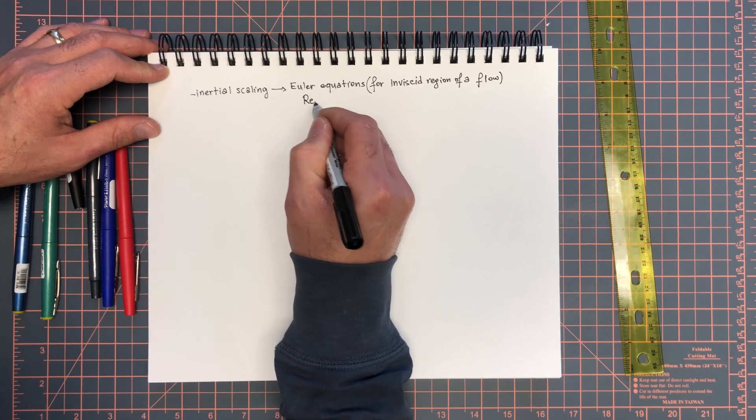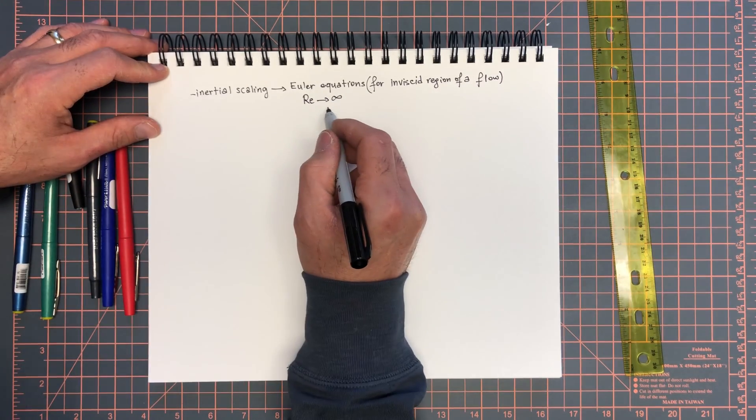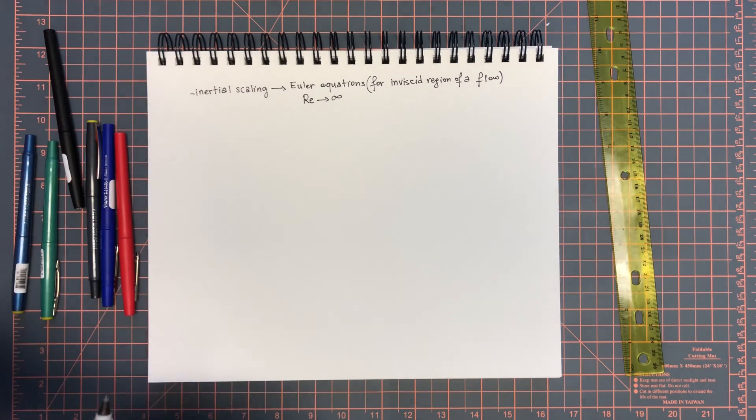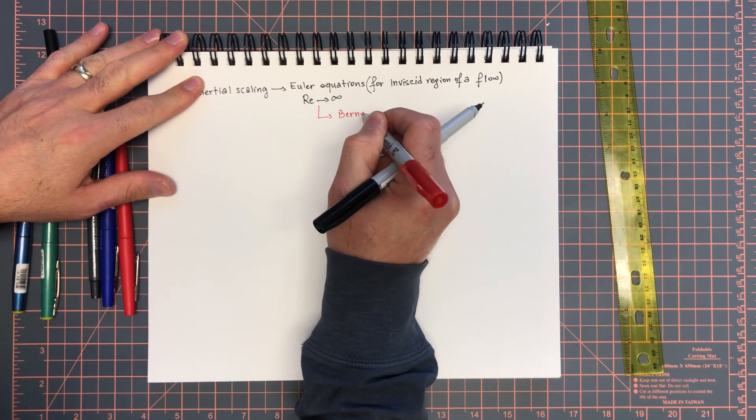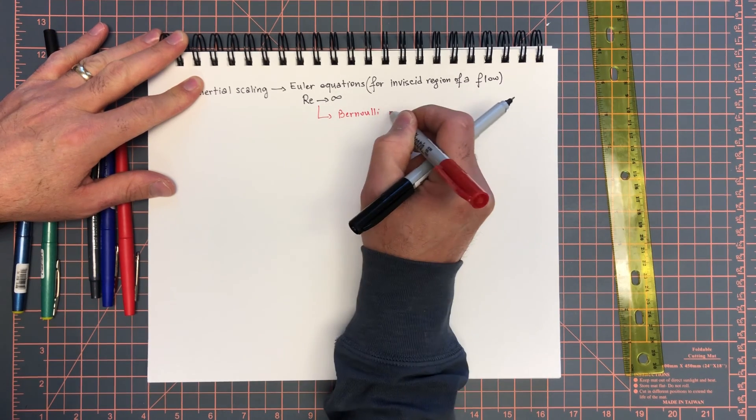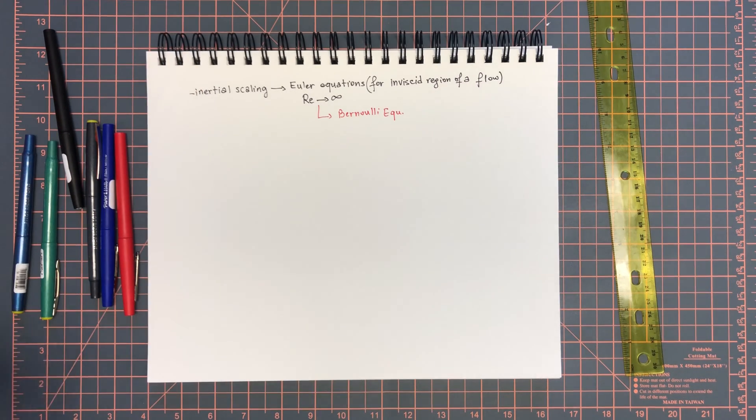From that we deduced the famous Bernoulli equation. The fact that we got rid of the viscous term allowed us to write the advection term, put it under a gradient, and then we integrated the full gradient. That gave us the balance between kinetic pressure and height or gravitational forces equal to a constant.